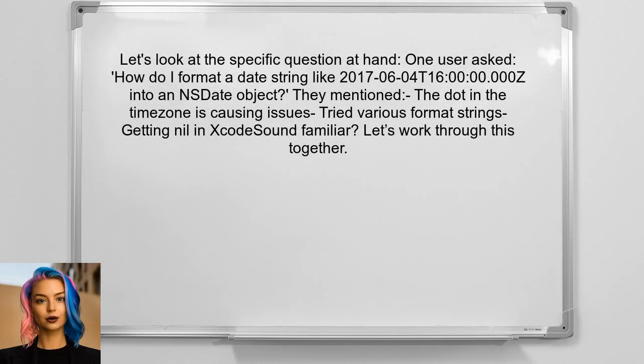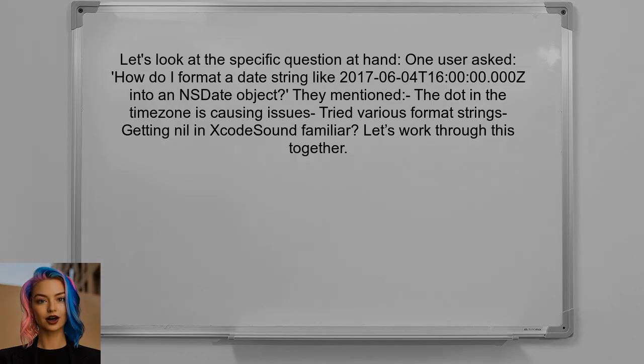Let's look at the specific question at hand. One user asked, how do I format a date string like 2017-06-04T16:00:00.000Z into an NSDate object? They mentioned that the dot in the timezone is causing issues, and despite trying various format strings, they keep getting nil in Xcode. Sound familiar? Let's work through this together.